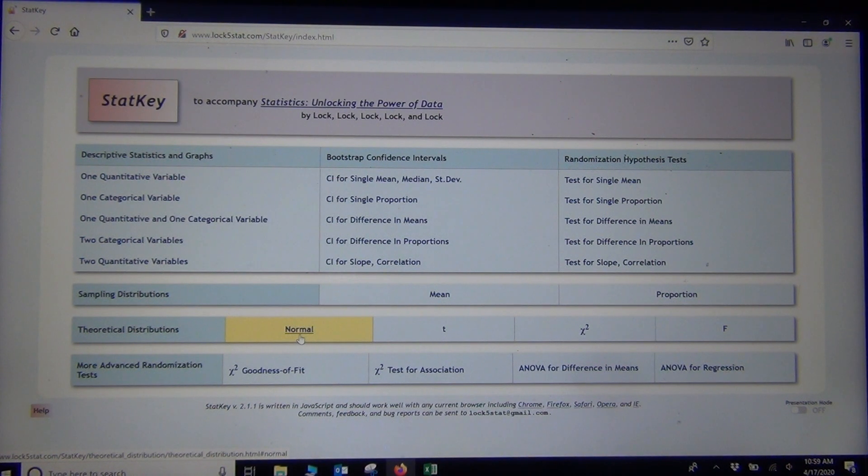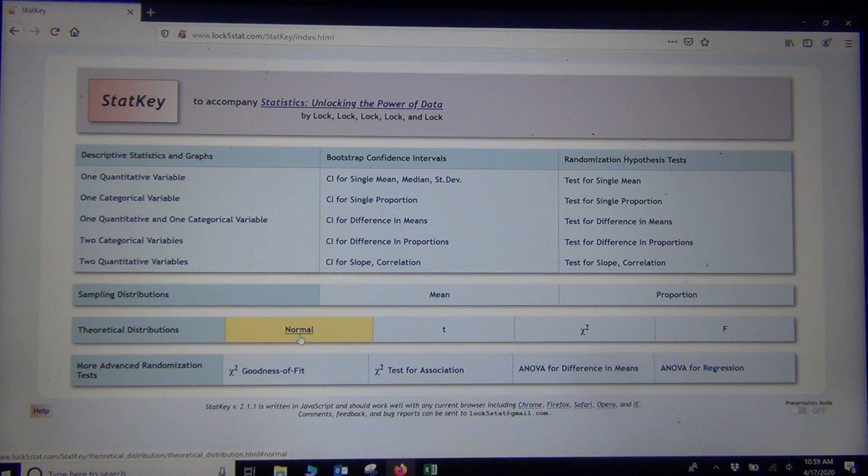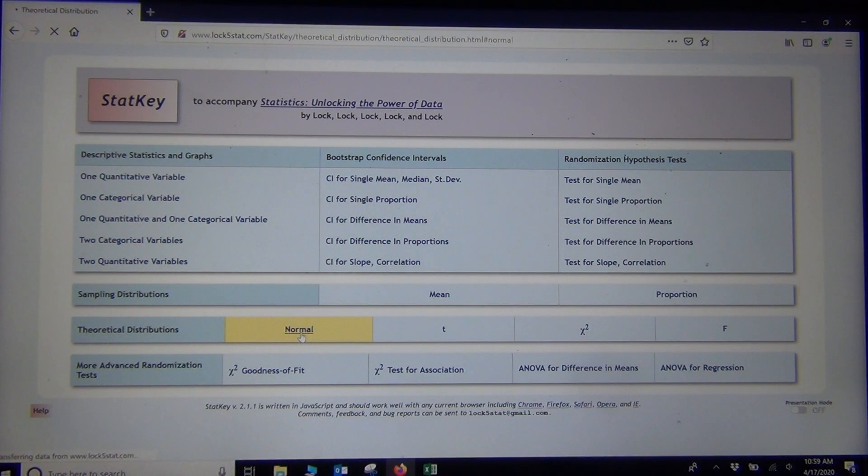Now the normal calculator is under theoretical distributions normal. So it's right there. It says theoretical distributions normal. This actually also can be used for z-score calculations. So if you're doing anything with a z-score, we can look up things that go with z-scores as well. So the normal calculator, you can use this on really any normal data if you know the mean and the standard deviation.